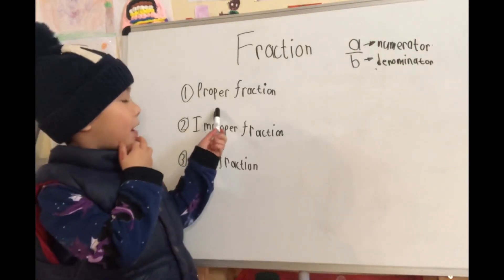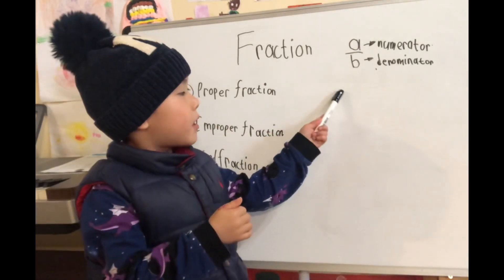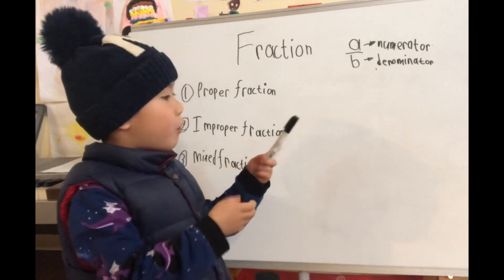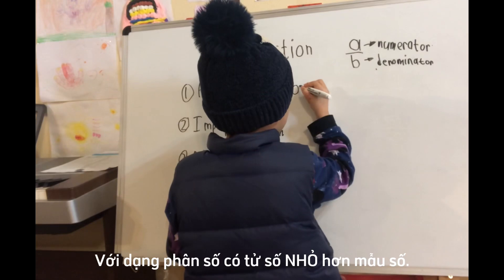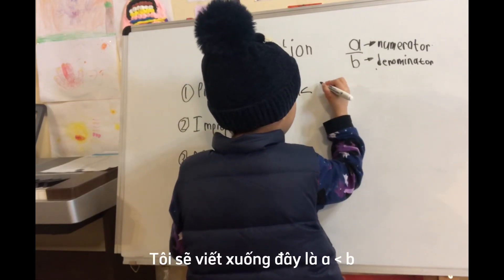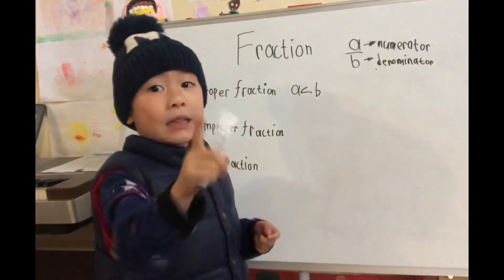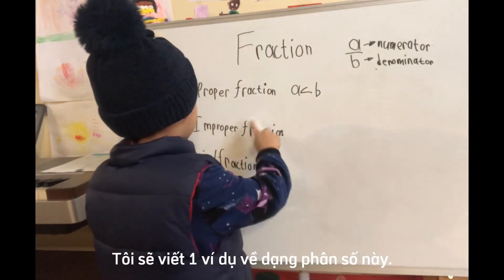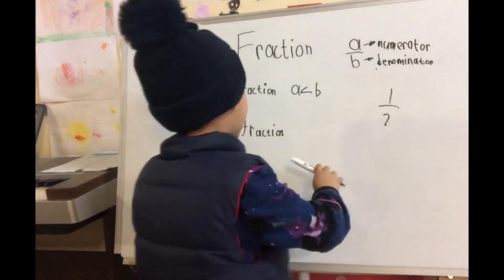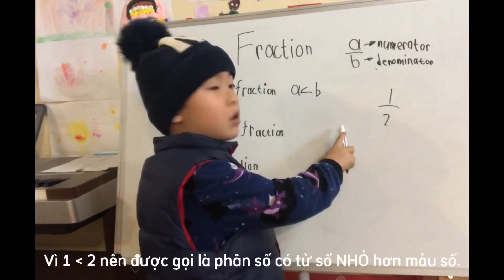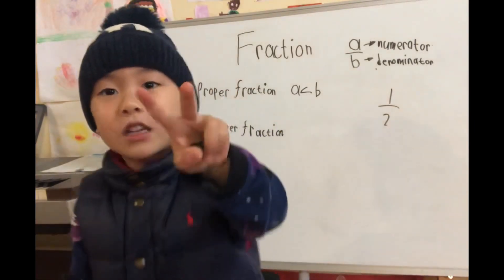So, did you know what is proper fraction? The denominator is more than the numerator, and I will write A less than B. I'll give you one example of proper fraction. Do you know why it's proper fraction? Because 1 is smaller than 2. That's why it's proper fraction.